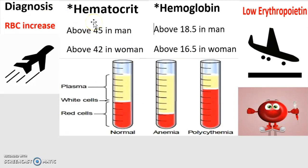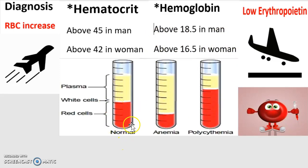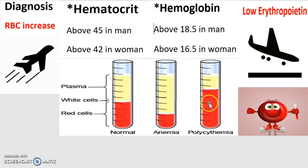For diagnosis, you'll notice that hematocrit is above 45 in men and above 42 in women, and hemoglobin will be above 18.5 g/dL in men and above 16.5 in women. If you take a blood sample, a person with polycythemia will show an increased level of red blood cells and a decreased level of plasma in the same volume, along with a decrease in erythropoietin — the hormone the liver and kidney secrete to signal the bone marrow to stop producing red blood cells.